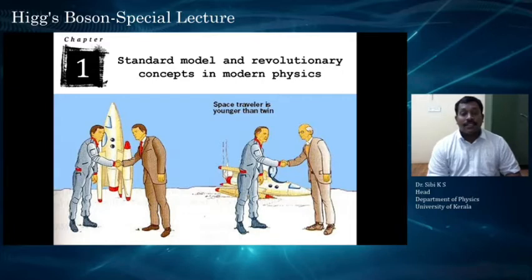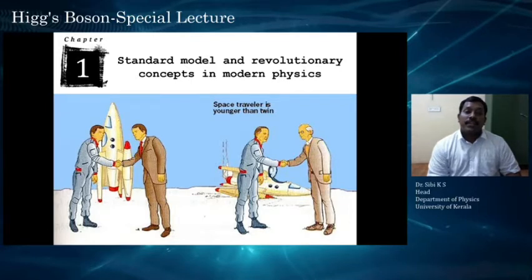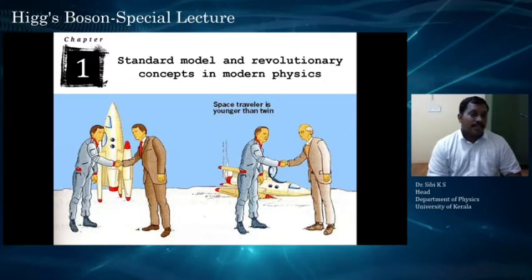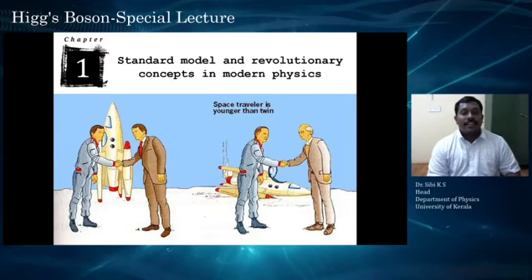The twin paradox is a more exotic story than length contraction or mass expansion. There are two twins — one is selected for space travel at a speed very close to the speed of light. When he comes back after 20 or 30 years, he finds himself to be younger than his twin brother. These are concepts which need deeper understanding.